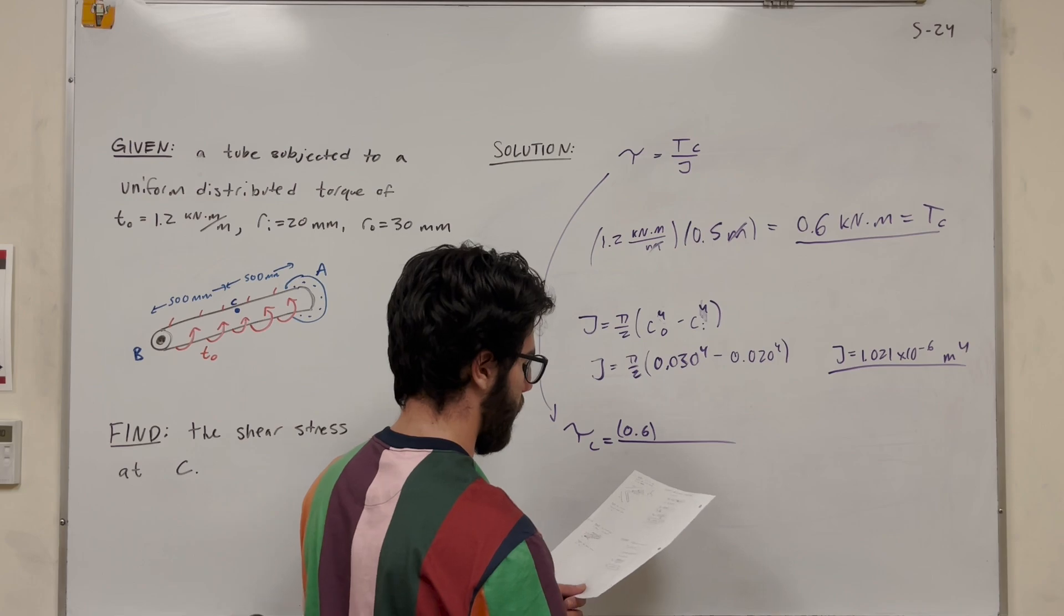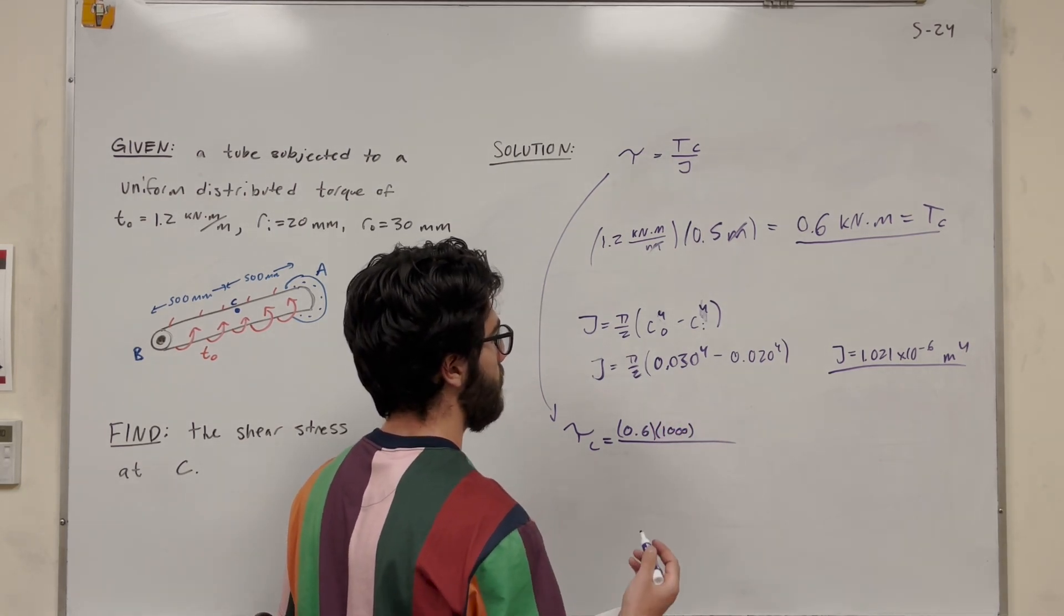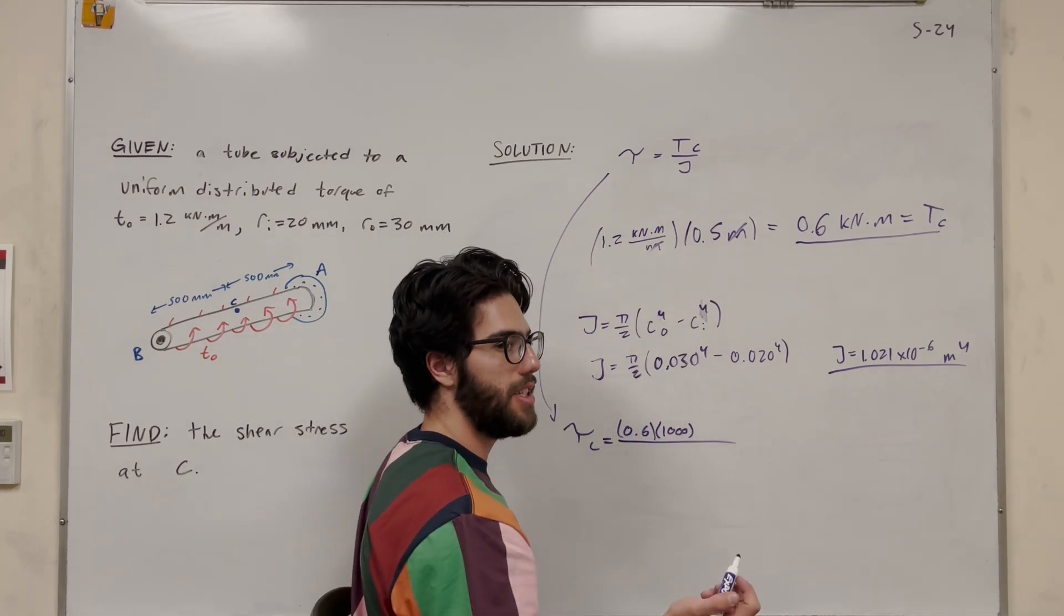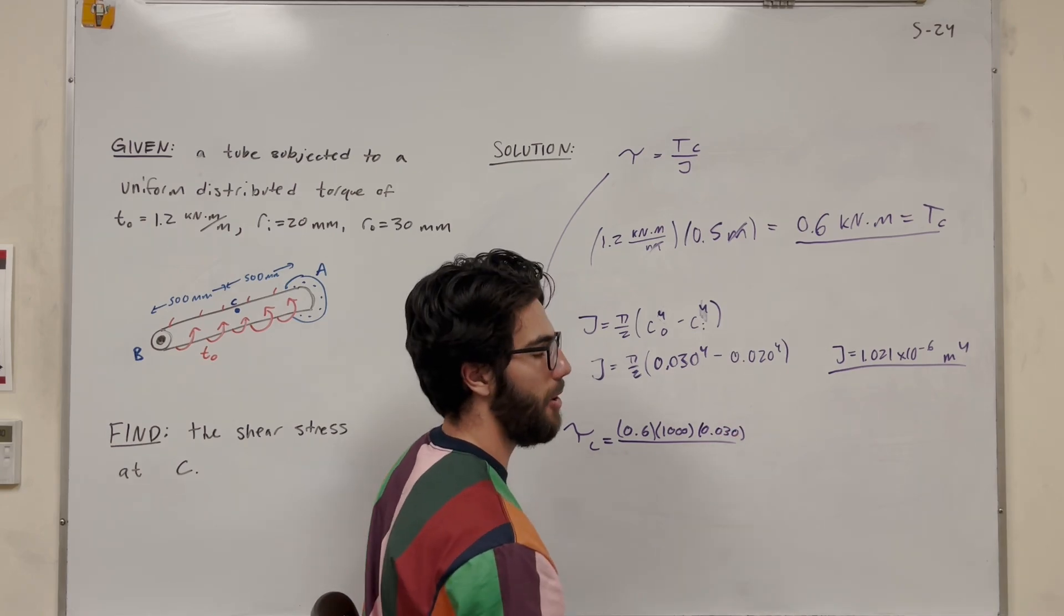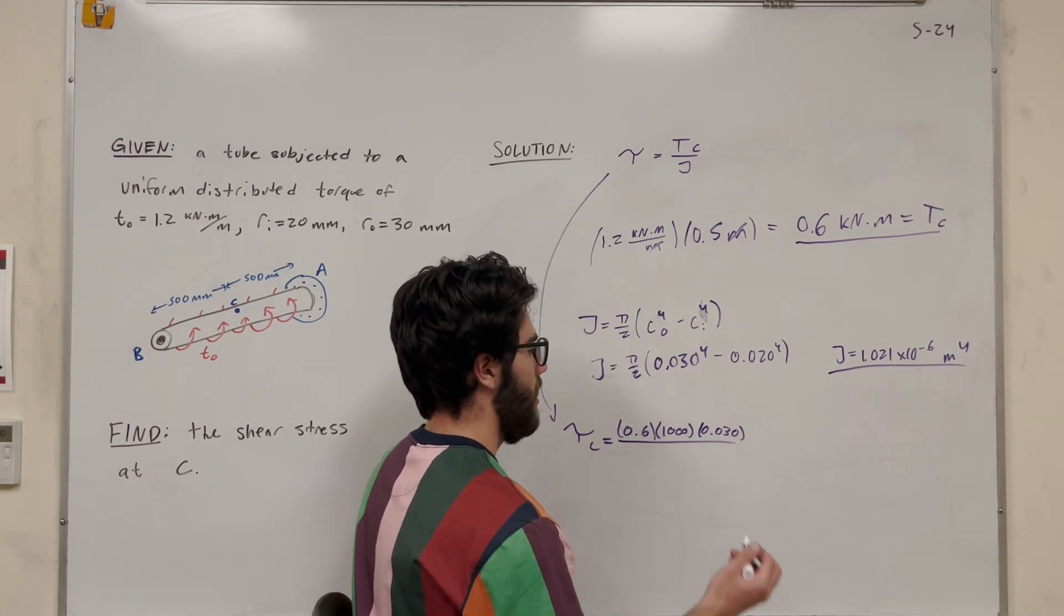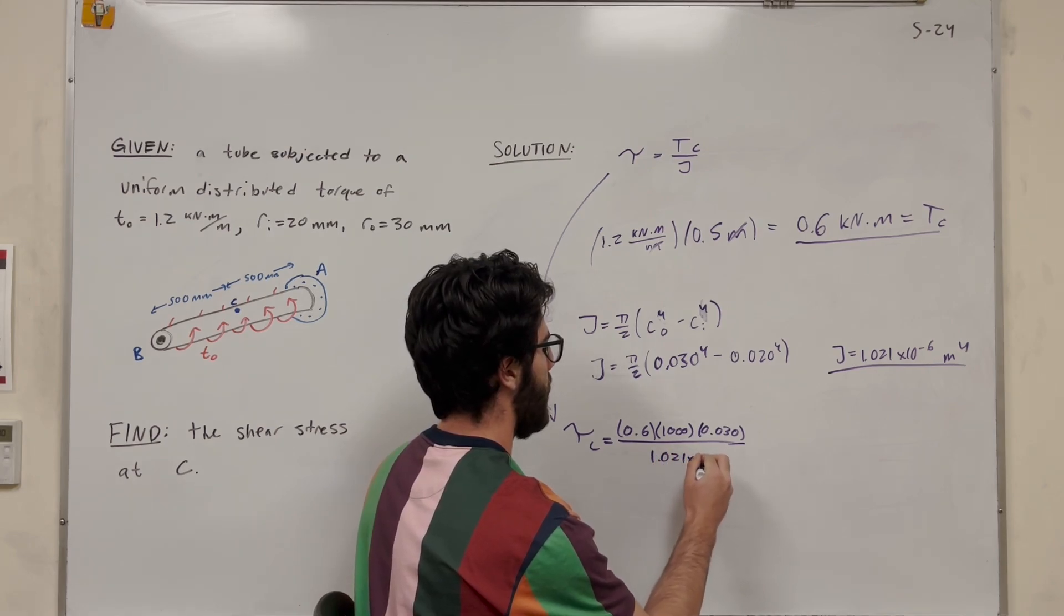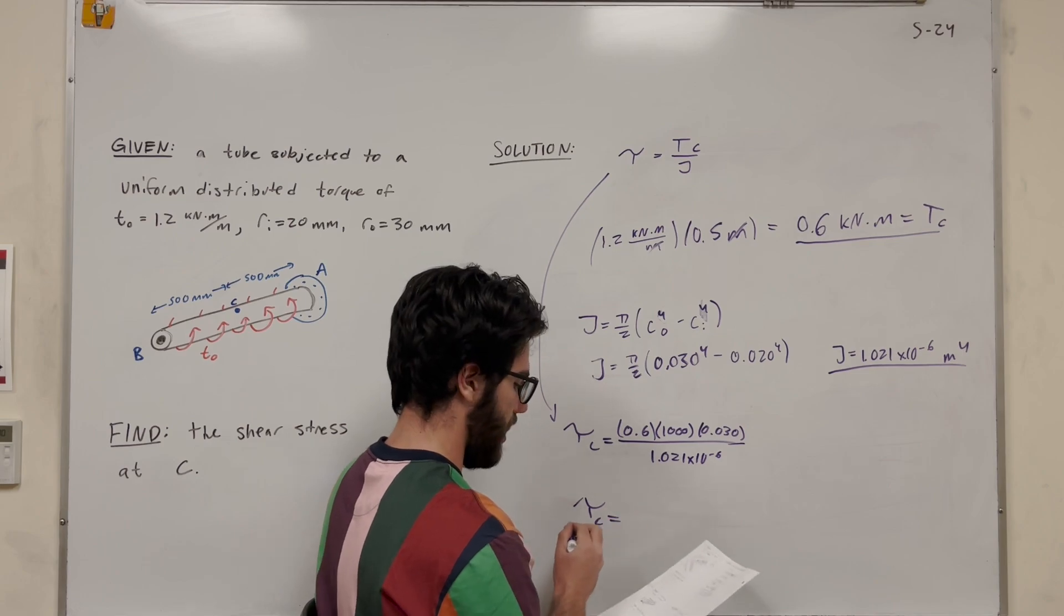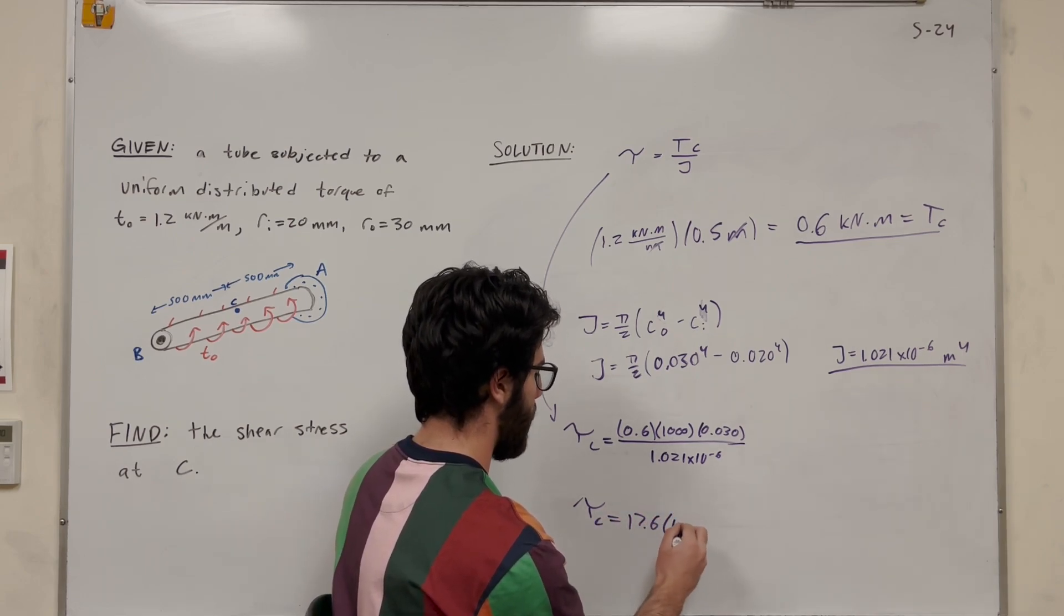So let's convert it to newtons by multiplying by 1,000. Then we're going to multiply it by radius, which is the radius from the inside to the outside, which is going to be 0.03 meters, that outer radius. And then we're going to divide it by our polar moment of inertia, which we just found. 1.021 times 10 to the negative 6th. And you're going to find that our shear stress at C is equal to 17.6 times 10 to the 6th pascals.